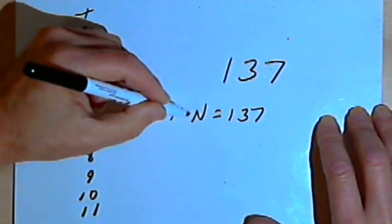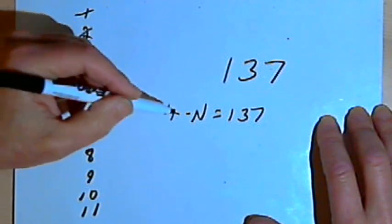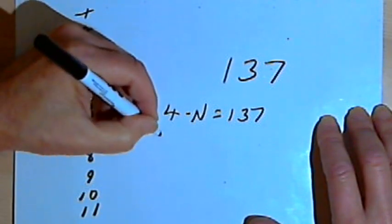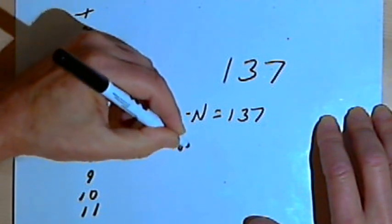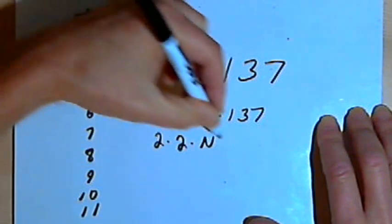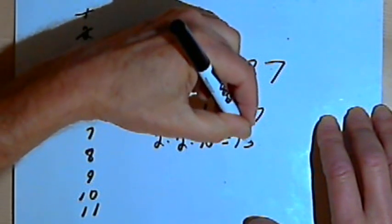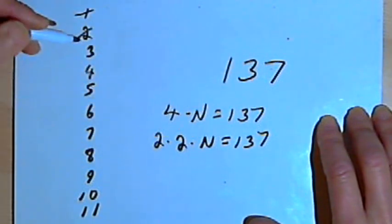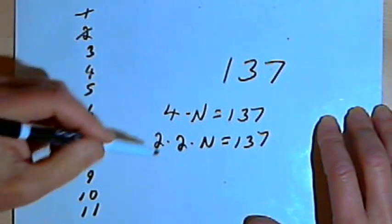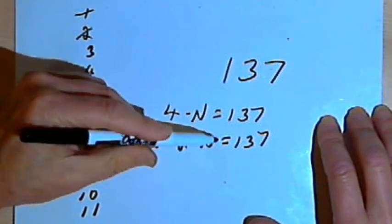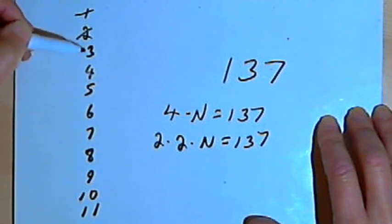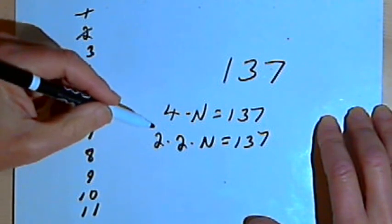Now if 4 times n equals 137, since 4 is 2 times 2, I could also write 2 times 2 times n equals 137. But if I could write that, then it would mean that 2 is a factor of 137. But I've already found out it isn't. So therefore, 4 is not going to work either.